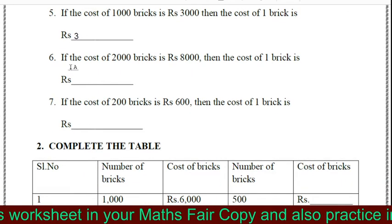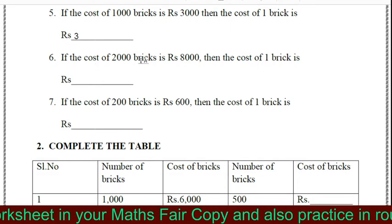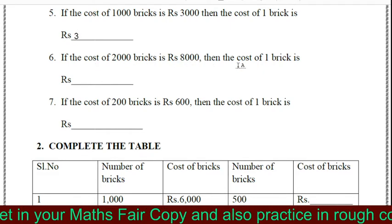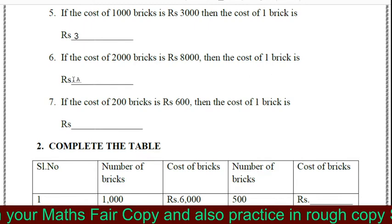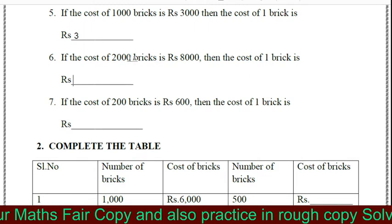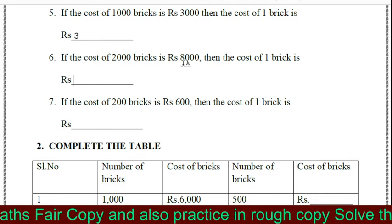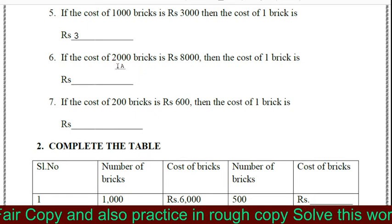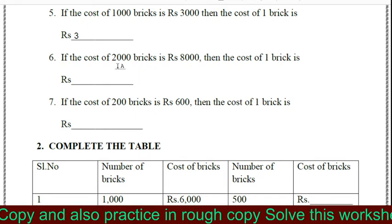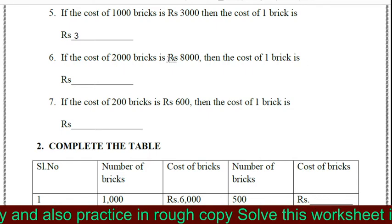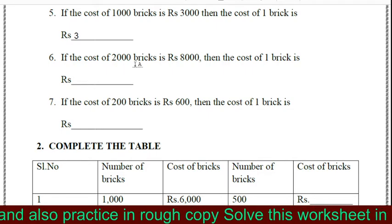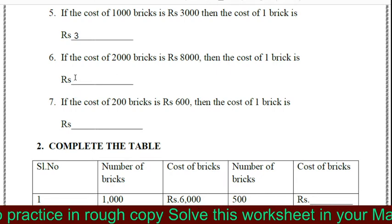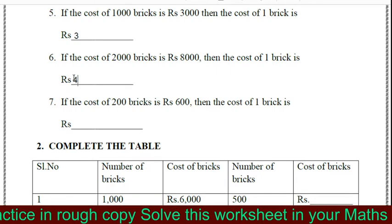The next question is: if the cost of 2,000 bricks is rupees 8,000, then the cost of 1 brick is rupees what? Similarly, using the table of 2 — 2 fours are 8, so 2,000 fours are 8,000. So the cost of 1 brick is rupees 4.